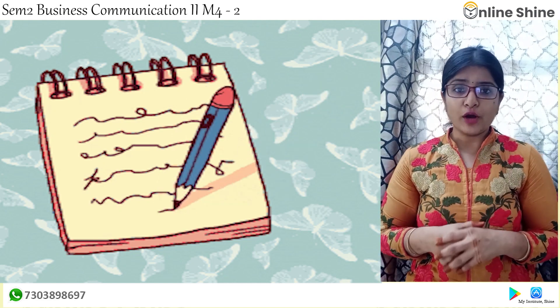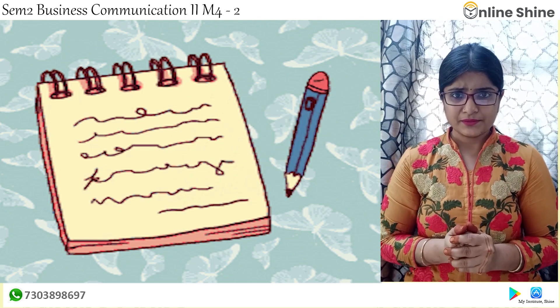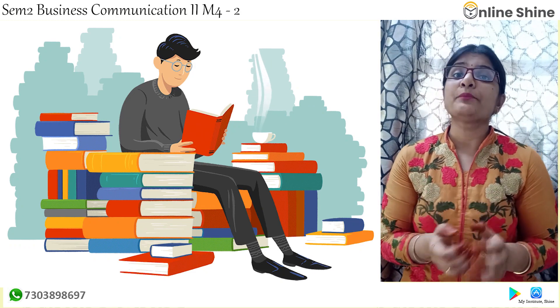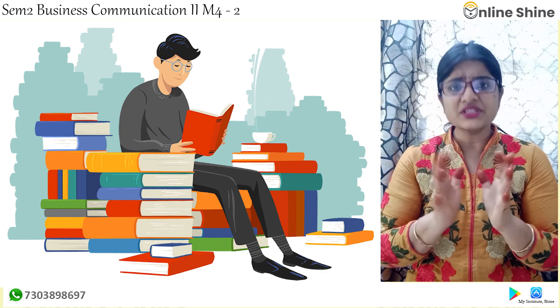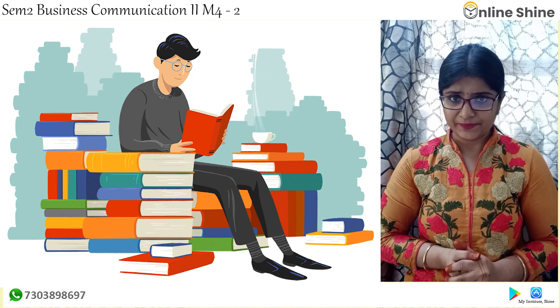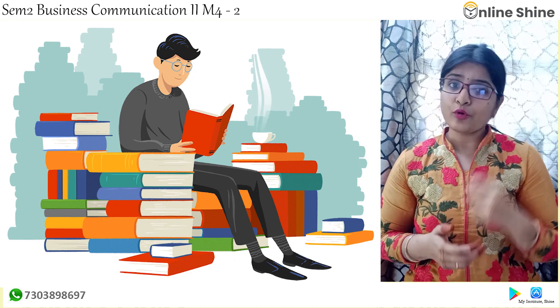Next topic is: steps in summary writing. What are the different steps? The first is: read the entire passage a couple of times. Whatever passage is given, read it two to three times and understand what is important in the passage. Then identify the main idea — underline the important things or get the overall main idea.